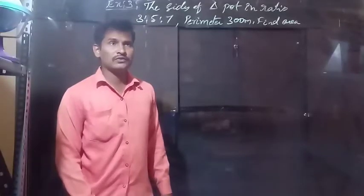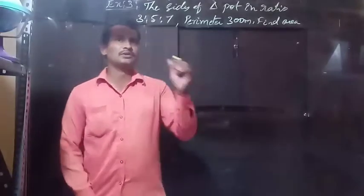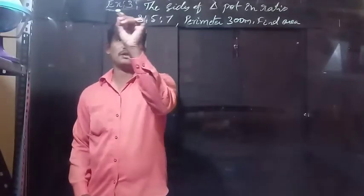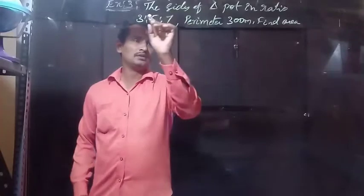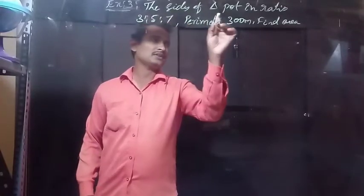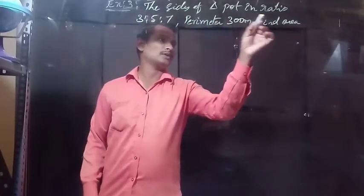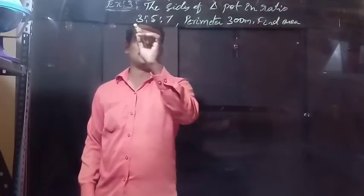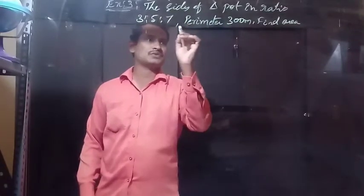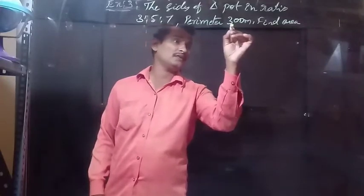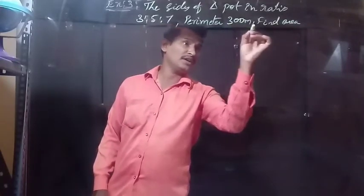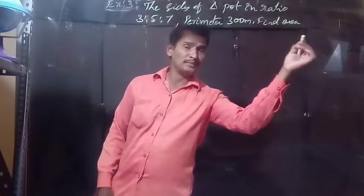The sides of the triangular plot are in the ratio 3:5:7 and the perimeter is 300 meters.